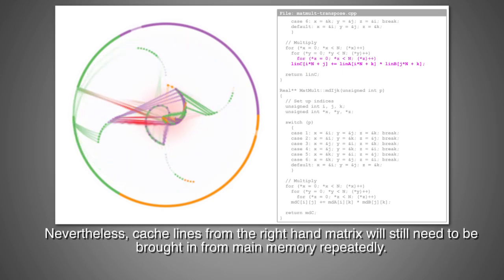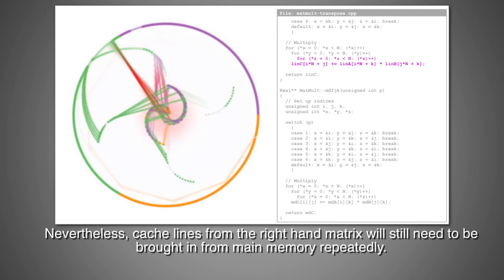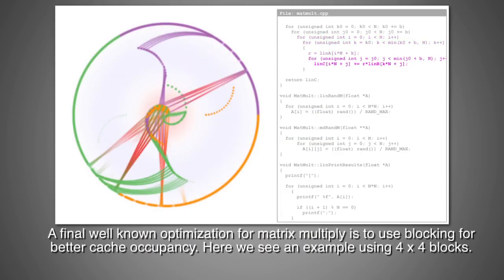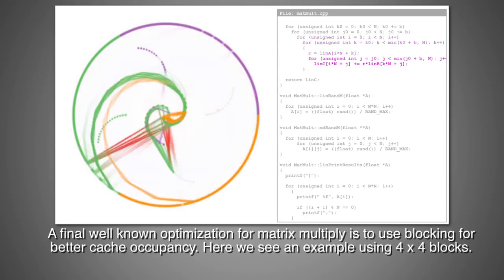Nevertheless, cache lines from the right-hand matrix will still need to be brought in from main memory repeatedly. A final, well-known optimization for matrix multiply is to use blocking for better cache occupancy.